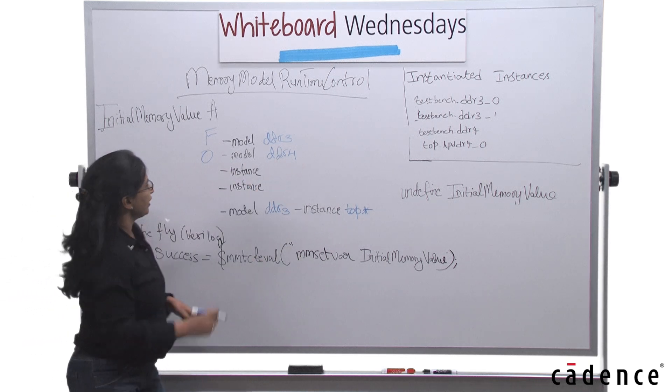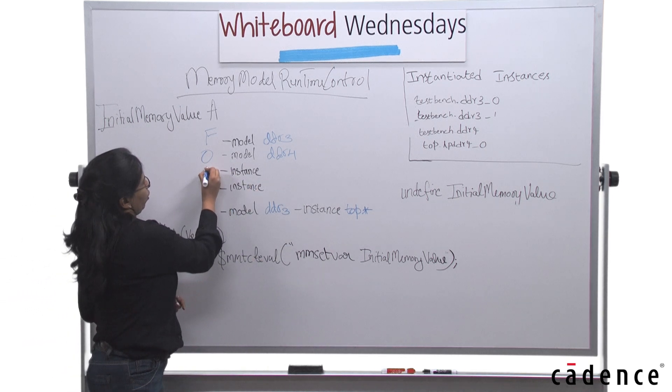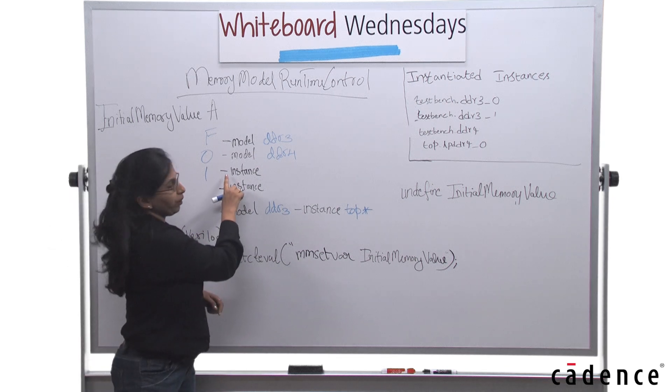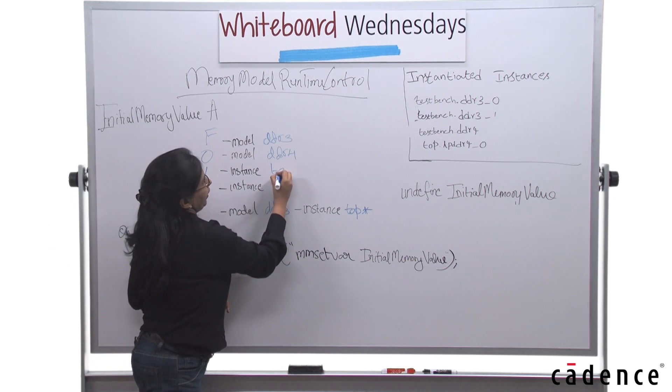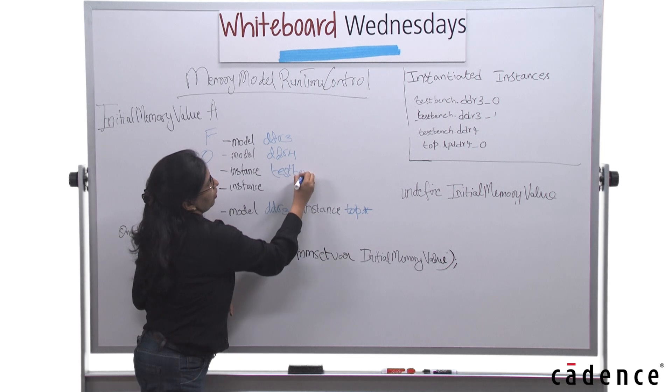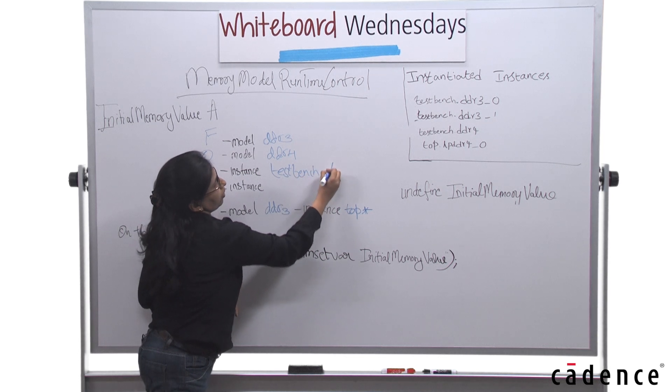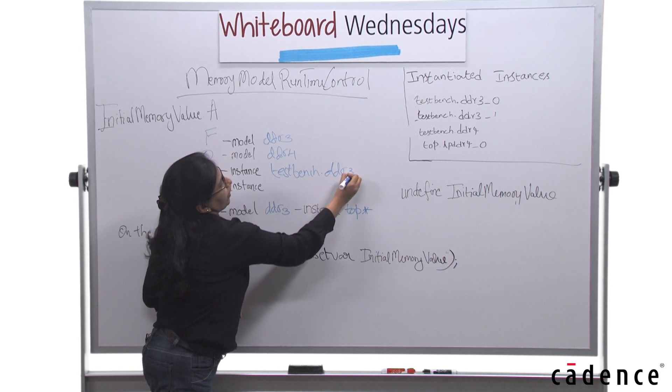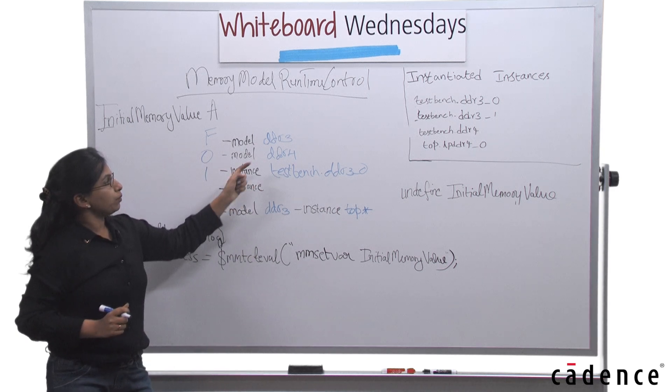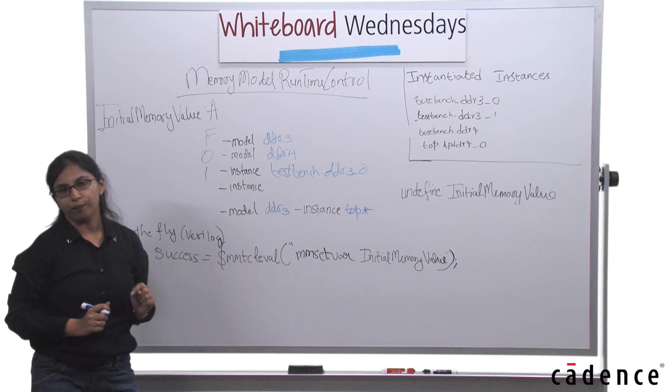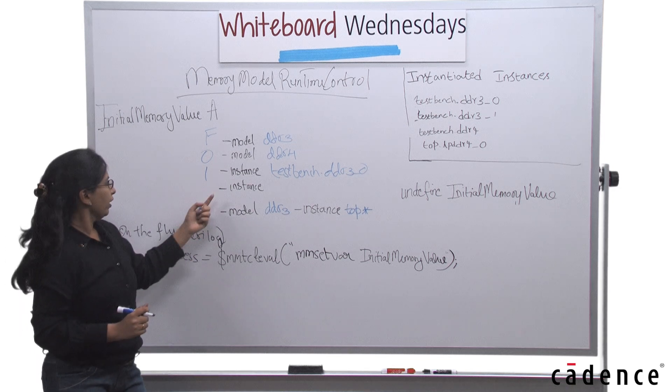Similarly, if you want a specific instance, then I could say 1, where I'm changing the initial memory value to 1, dash instance to testbench.ddr3 underscore 0. This means the specific instance now takes the initial memory value as 1.